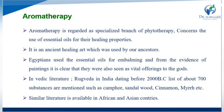In Vedic literature from India, from the Rigveda dating before 2000 BC, a list of about 700 substances are mentioned, such as camphor, sandalwood, cinnamon, and myrrh oil. Similar literature is also available in African and Asian countries.